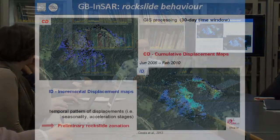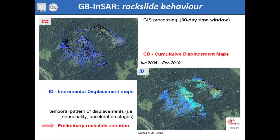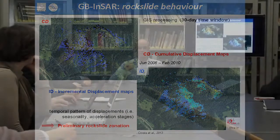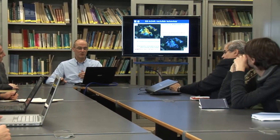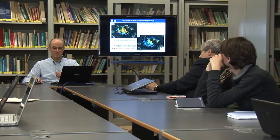From this dataset we extracted monthly displacement maps, both cumulative and incremental. Having a spatially distributed displacement field, we are able to define areas that respond differently through the seasonal regime of the landslide. We coupled this with geomorphological mapping from the 1960s up to 2013, with good aerial photo coverage of the entire area.